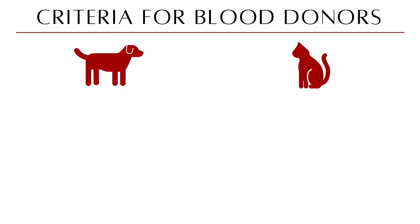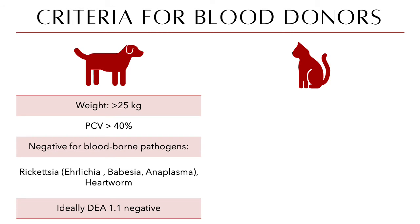Donor animals must satisfy certain criteria. For dogs: weight must be greater than 25 kg — typically large breeds like Labradors, Golden Retrievers, or German Shepherds. The packed cell volume must be 40% or greater. They must be negative for blood-borne pathogens such as blood parasites and heartworms, and ideally should be DEA 1.1 negative, especially if the recipient is DEA 1.1 negative.